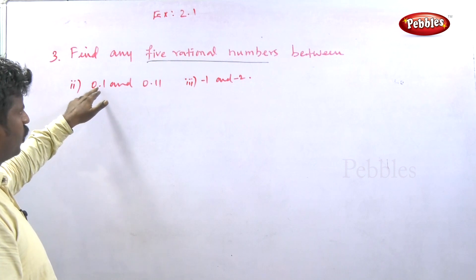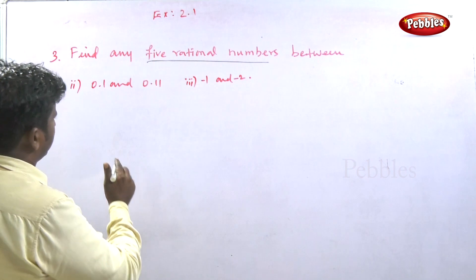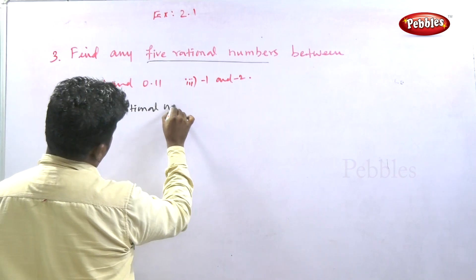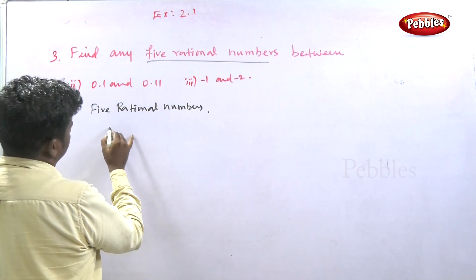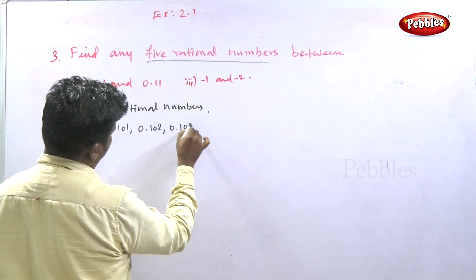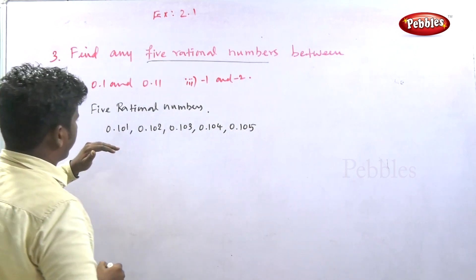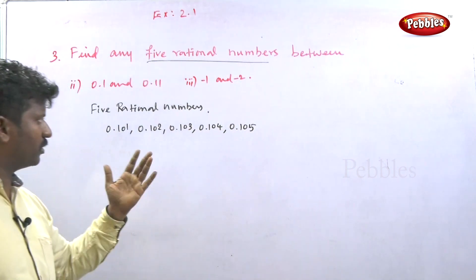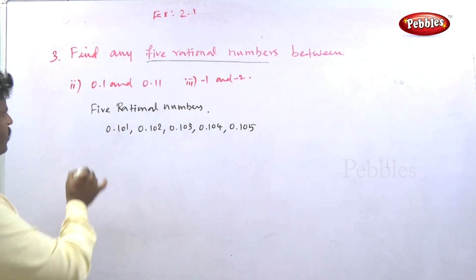The second sub-part of problem 3: find five rational numbers between 0.1 and 0.11. Since these are decimal numbers, we can write them directly: 0.101, 0.102, 0.103, 0.104, 0.105. We can write more numbers, but the question asks for just five.